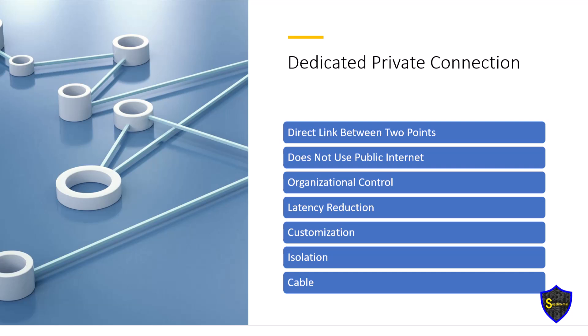The benefits of a dedicated private network include organizational control — you choose how to organize your network — latency reduction to reduce the load on the network, and security to prevent unauthorized access and mitigate security risks associated with public infrastructure. Customization allows you to add or remove servers and optimize traffic flow based on priority.